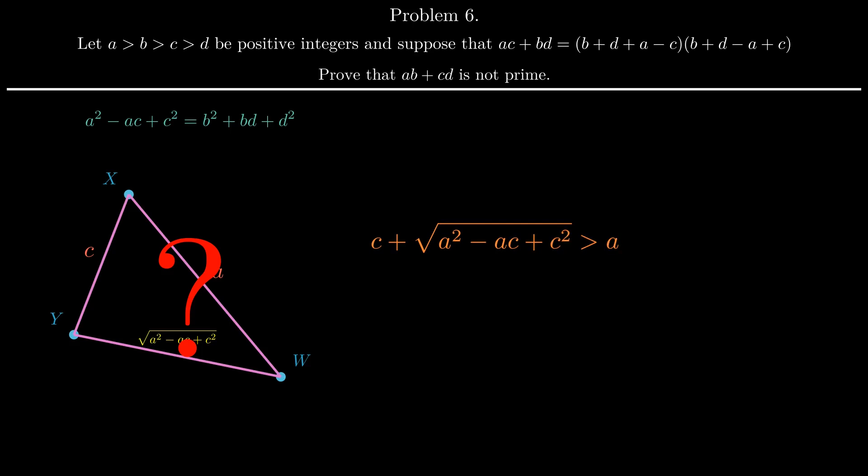Taking c to the other side and squaring both sides of the inequality, we have the following. Note that this preserves the equivalence as both sides are positive, so squaring isn't an issue. This inequality is equivalent to ac is greater than zero, which obviously holds as both a and c are greater than zero. So our triangle XYW exists.